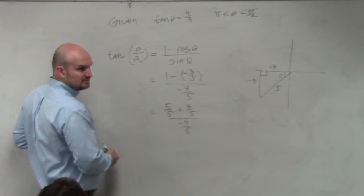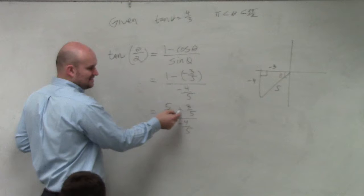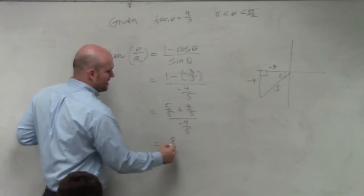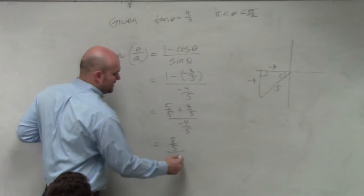Does everybody follow me with that? Minus a negative is positive. So therefore, I have 8 fifths divided by negative 4 fifths.